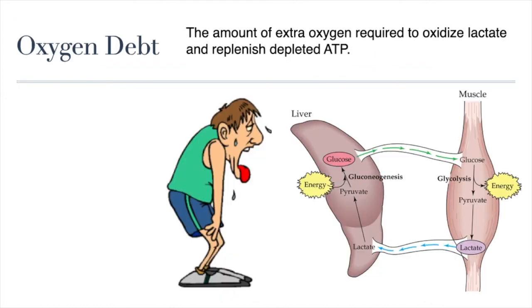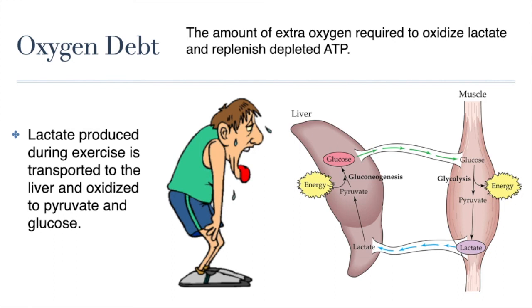Intense muscle activity also results in an oxygen debt, which is the amount of oxygen needed to compensate for the ATP produced without oxygen during muscle contraction. This is why we breathe heavily after exercise — this extra oxygen is needed to restore ATP and to metabolize lactate. The lactate that accumulates in our muscles is removed by our blood circulation and brought to the liver for further metabolism, where it is oxidized and converted back to pyruvate or converted into glucose.